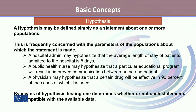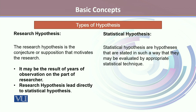We determine whether these statements are true or false. For this, we make hypotheses. Hypotheses can be thought of in two different types: there could be a research hypothesis and there could be a statistical hypothesis. The research hypothesis is a conjecture or supposition that motivates the research — it may be the result of years of observation on the part of the researcher. Research hypothesis directly leads to a statistical hypothesis, which is stated in such a way that it may be evaluated by appropriate statistical methodology.